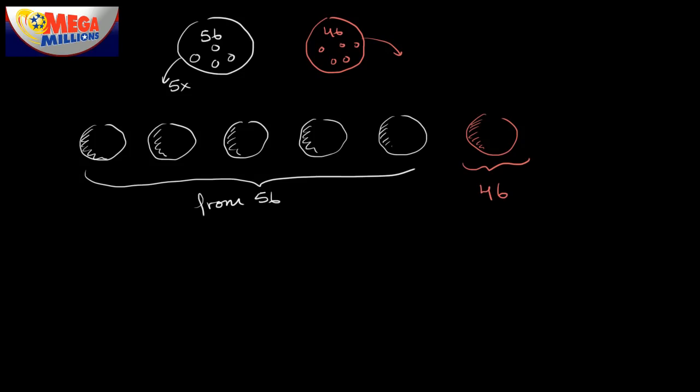If you are used to thinking in combinatoric terms, it would essentially say, well, out of a set of 56 things, I am going to choose five of them. So this is literally, you could view this as 56 choose 5. Or if you want to think of it in more conceptual terms...